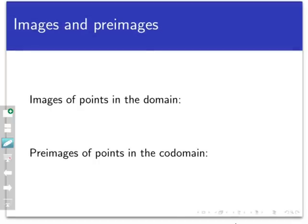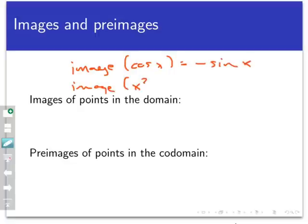Let's look at some images and preimages. For example, the image of the function cosine x would be negative sine x. And the image of x squared minus 4 would be 2x. So it's really easy to think about the images of these points under the function D, which is taking the derivative.